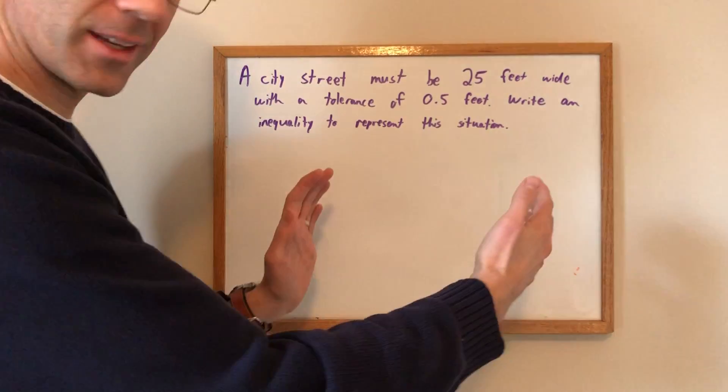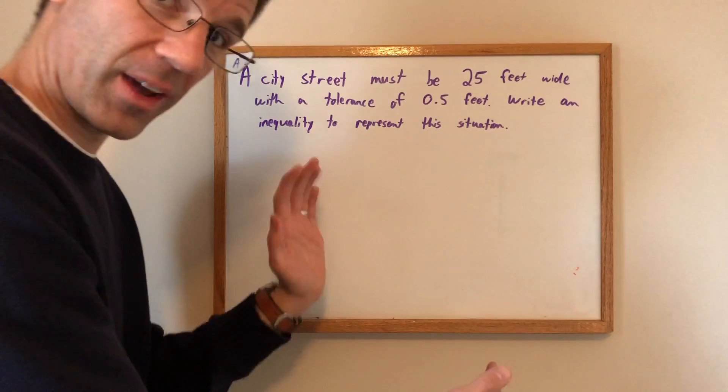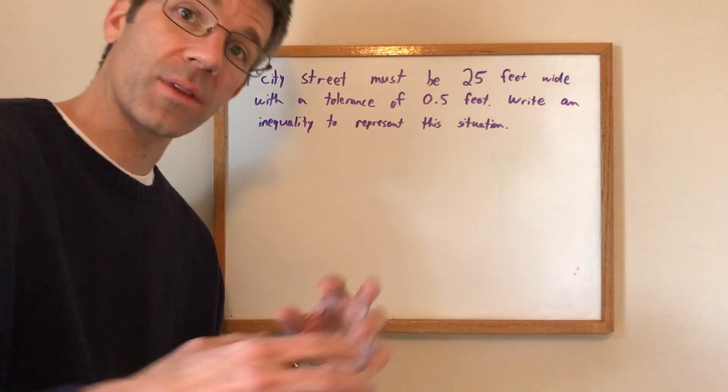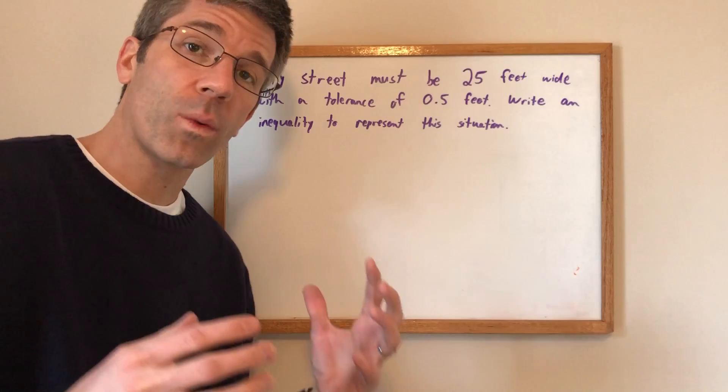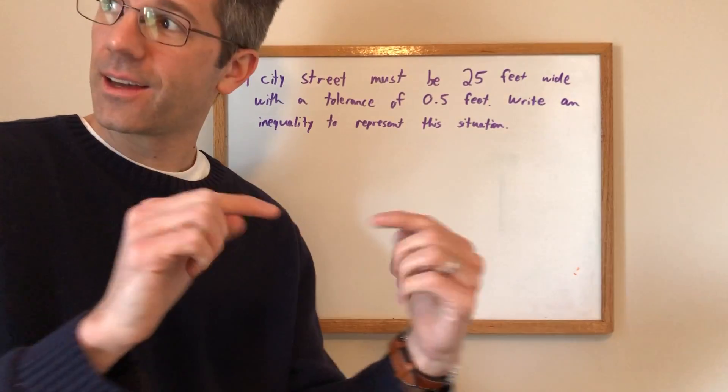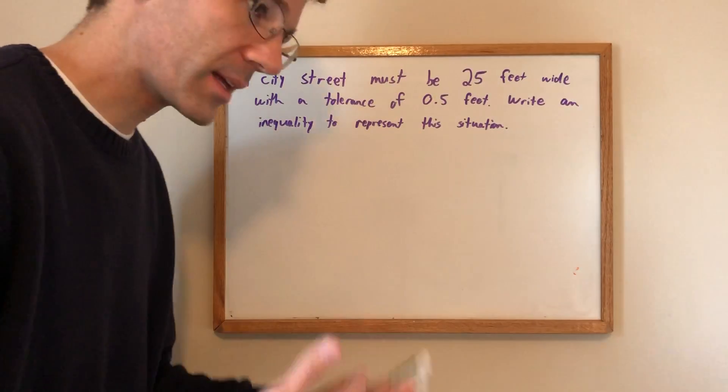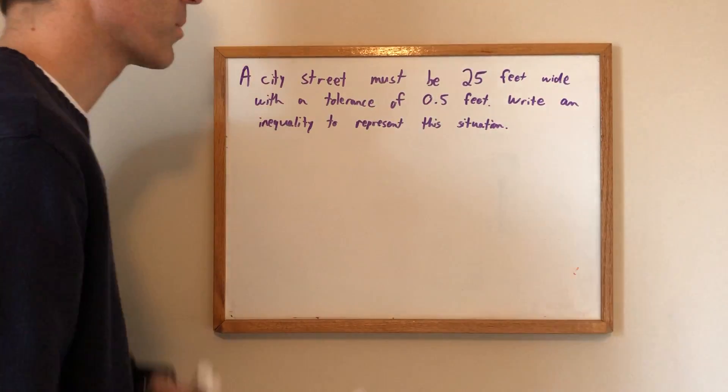It basically means that we will accept values within a certain range. Now, as I do this, I'm thinking we're going to accept values from here to here and everything in between. So automatically, within the context of what we've been doing, we know that we're dealing with less than because it's going to be between two values. So let's just go ahead and begin to build our understanding of this problem.